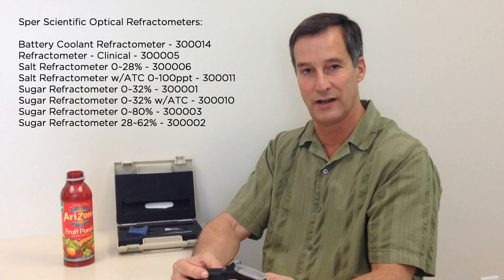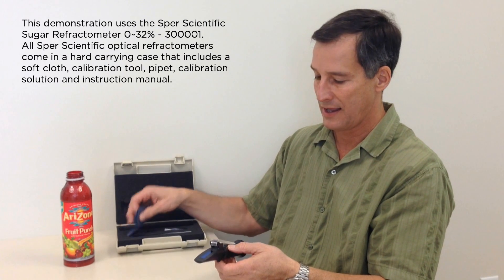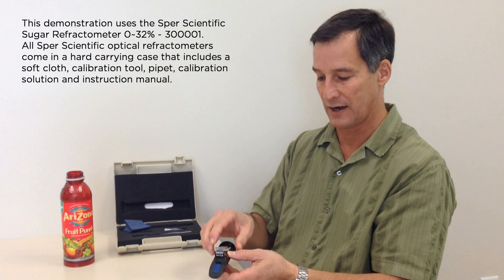Today I'll illustrate how we calibrate an optical refractometer. First, we simply open the prism cover and make sure there's no dust on the lens using a soft cloth so that we don't scratch it.